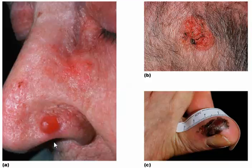Then look at B. This is squamous cell carcinoma, and this is often caused by being exposed to the sun. It has a pearl-like appearance — it's sort of shiny. And we would also need to look at the depth of this lesion.